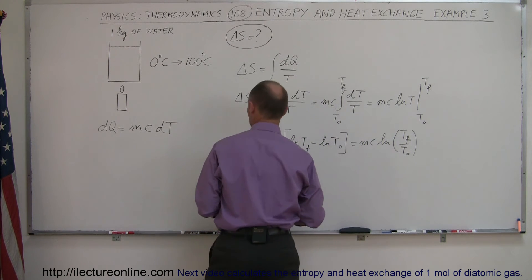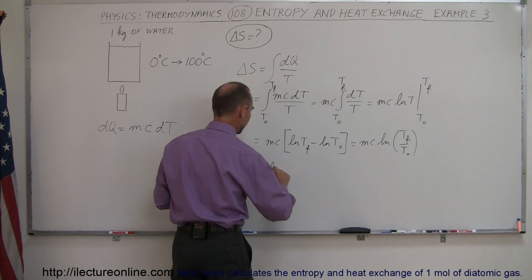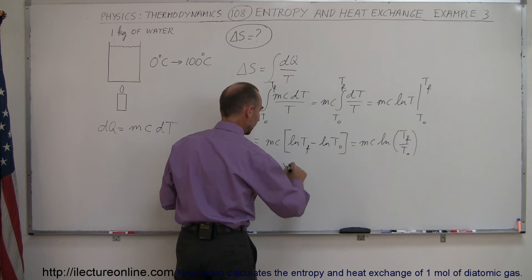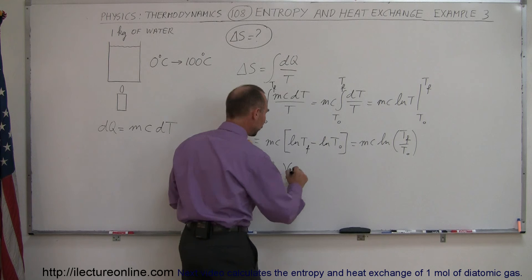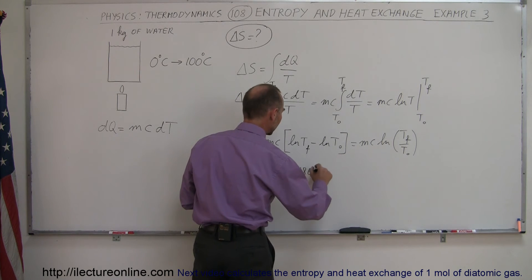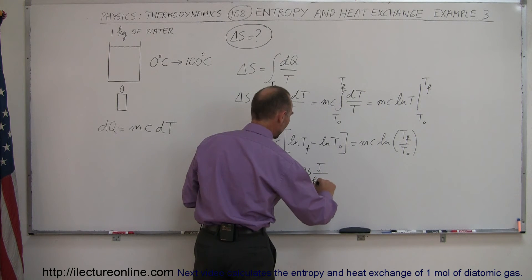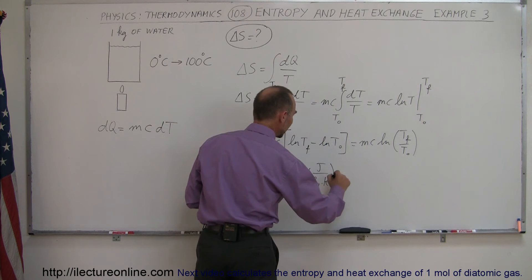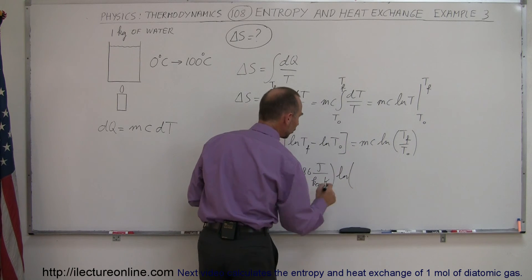Alright, so now let's plug in the numbers. The mass is one kilogram. C for water is 4,186 joules per kilogram per Kelvin degrees times the natural log of the ratio of the final temperature.